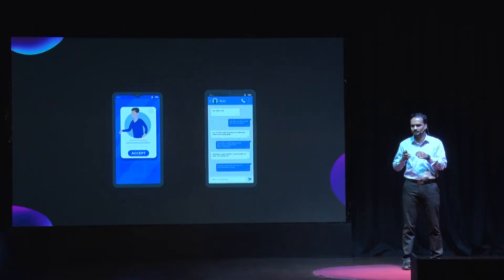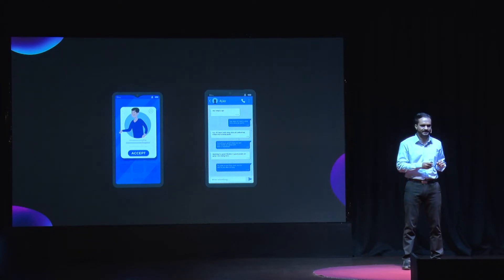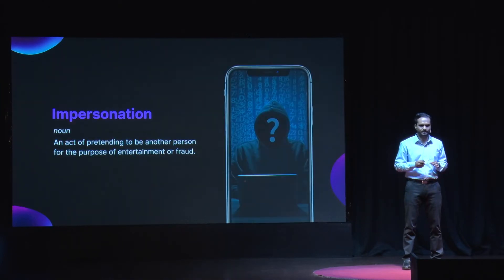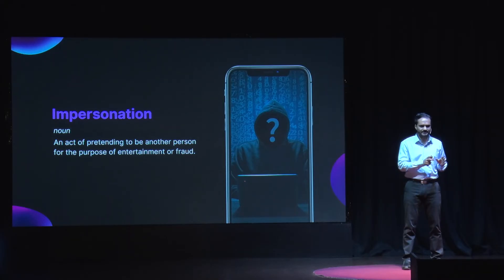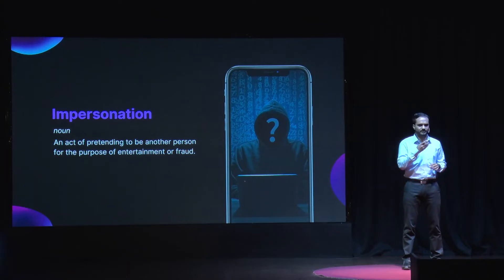Because one of his friends had already ended up paying 15,000 rupees to the hacker, thinking it was a genuine request. What happened here wasn't a hacking attempt — nobody hacked into Ajay's account. What the hacker did was a clever social engineering technique known as impersonation. The hacker used Ajay's identity — his profile picture, cover picture — to ask for a financial favor.